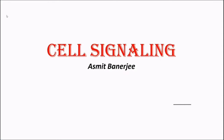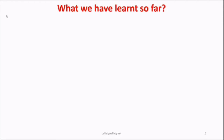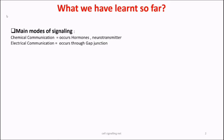Hello everyone, this is the second video of the cell signaling series. In the previous video we discussed the main modes of cell signaling: the chemical communication that occurs by hormones and neurotransmitters, and electrical communication that occurs through gap junctions.